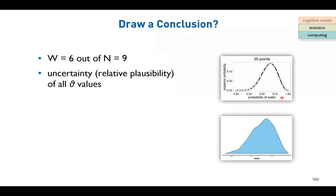The idea is we know that around two-thirds, 0.66, the relative density is highest. It means it is the most likely parameter that could have generated six out of nine data points. But we also know that if the true parameter is perhaps 0.5 or 0.75, we could in theory also observe these results. The relative plausibility of observing the same data under those parameter values is lower compared to when the parameter is 0.66.